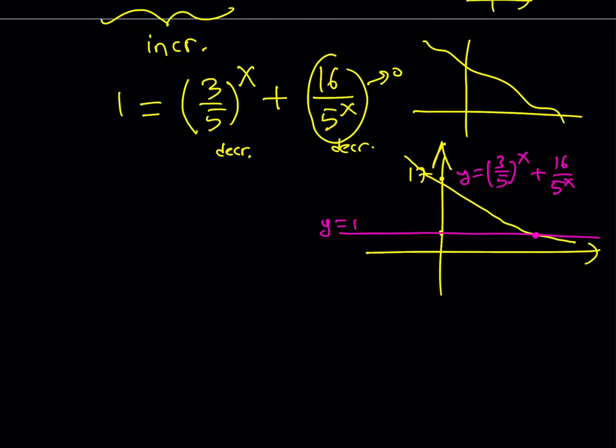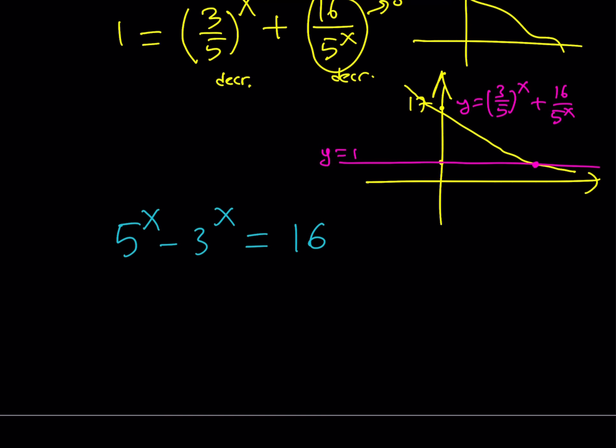So let's write our original equation one more time. Our original problem was 5 to the power x minus 3 to the power x equals 16. We're basically saying that this equation has a single solution. And how do you find that? Guess and check.